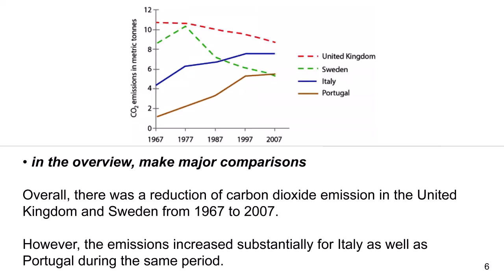In the overview, make major comparisons. Overall, there was a reduction of CO2 emissions in the United States and Sweden from 1967 to 2007. However, the emissions increased substantially for Italy as well as Portugal during the same period.